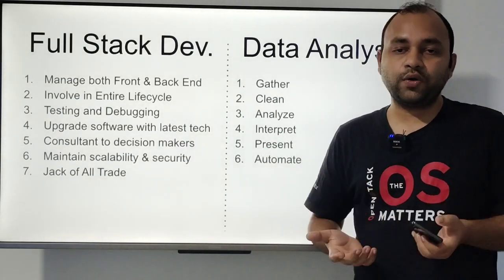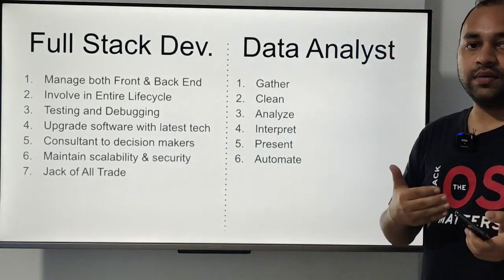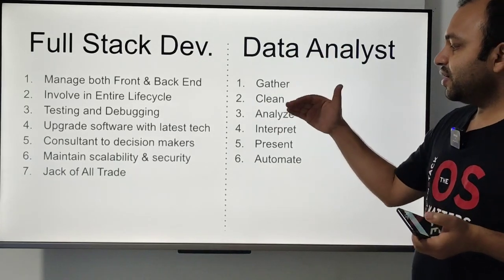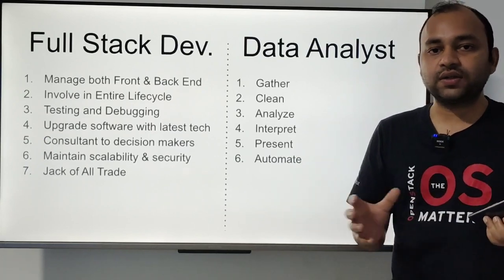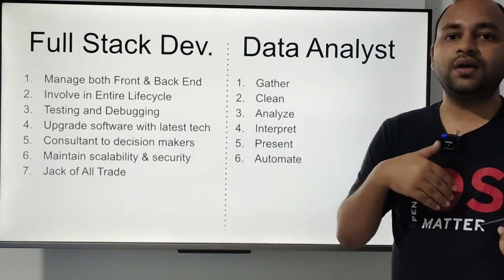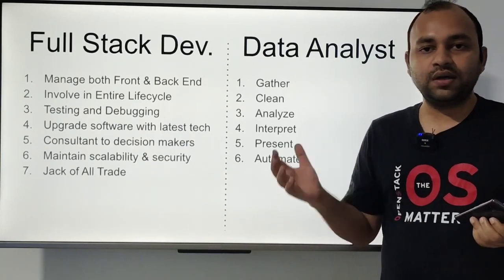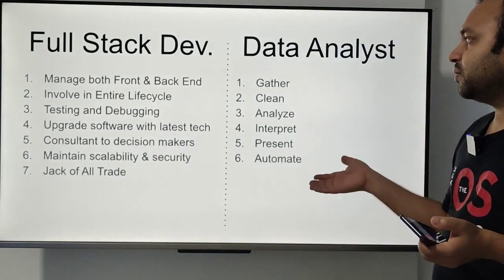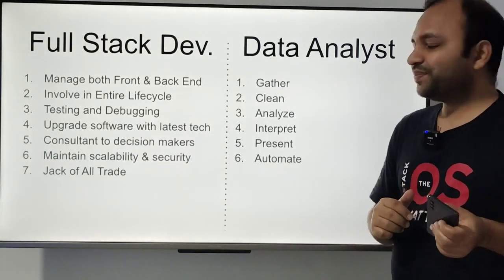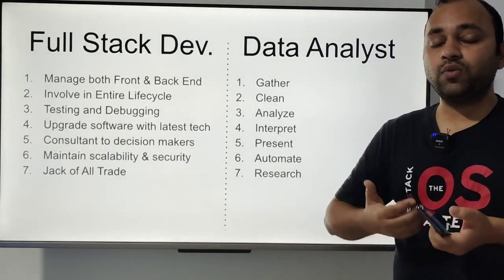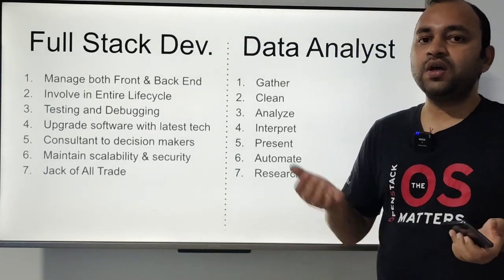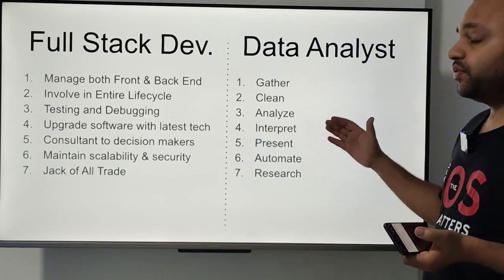Finally there is the automation part — a technical aspect where, once you are involved in the first five phases, you try to automate the process. If the analysis is needed again and again, like business review decks, dashboards, or reports, you try to automate it using VBA programming or a business intelligence tool. This makes the profile a little bit more interesting. They also do research whenever working with new data or new problems.